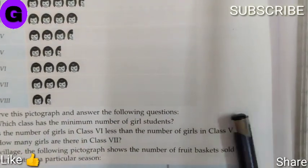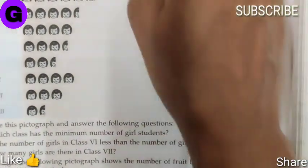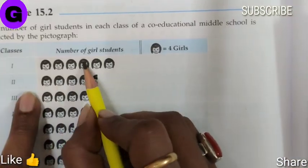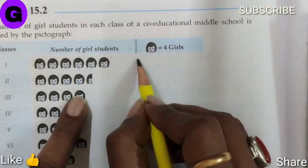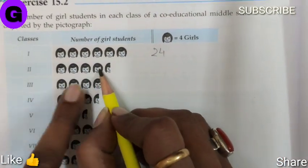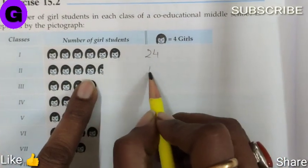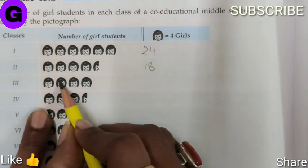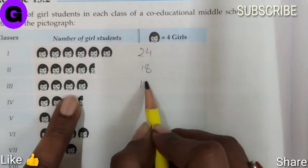Let me make things easier for you. Class 1 has 6 faces, 6 times 4 equals 24 girls. Class 2 has 4 and a half faces, 16 plus 2 equals 18 girls. Class 3 has 4 faces, so 16 girls.